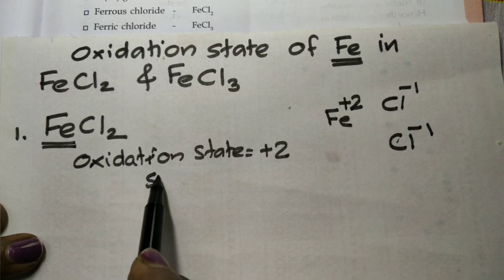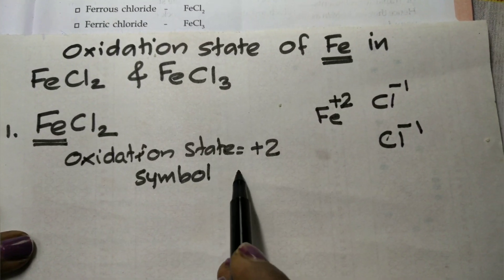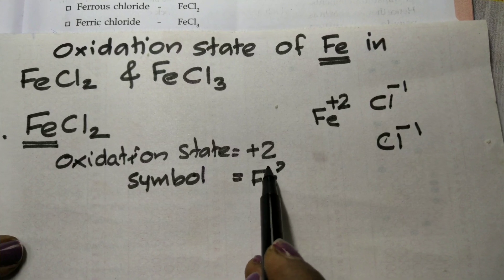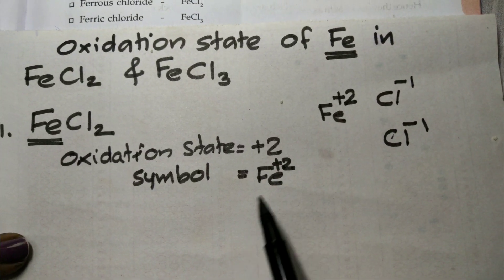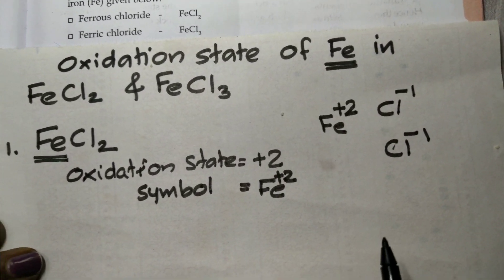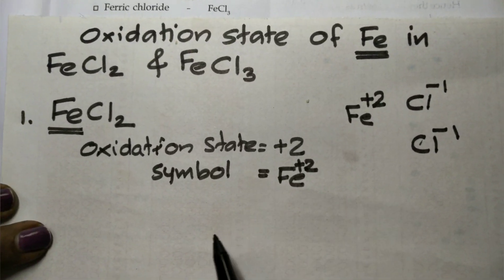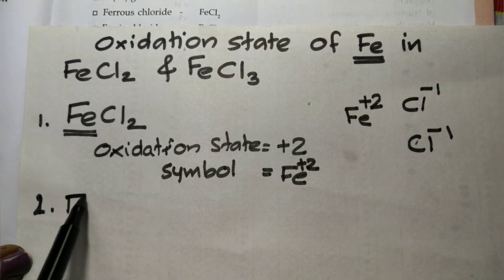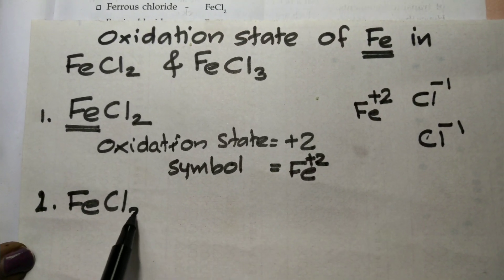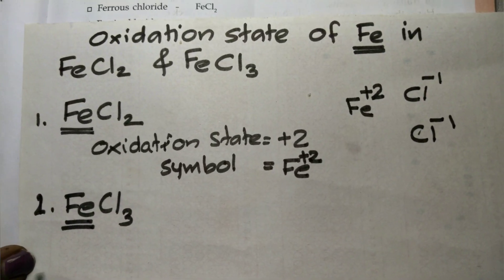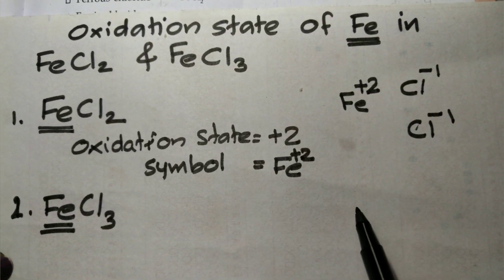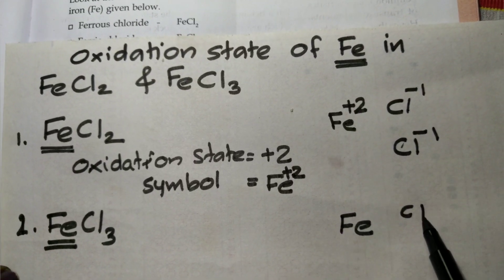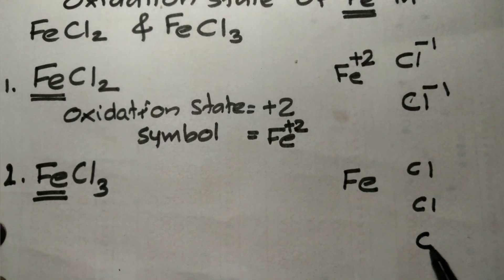So the oxidation state of Fe is plus 2, written as Fe²⁺. Now, for another case, the oxidation state of Fe is equal to 3.